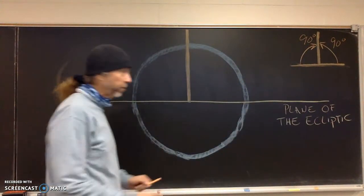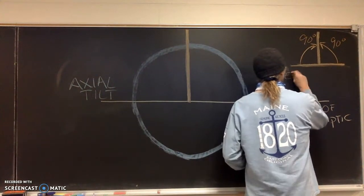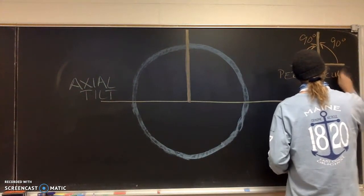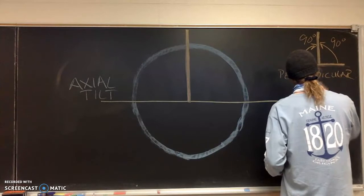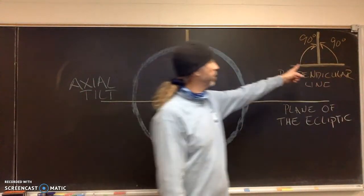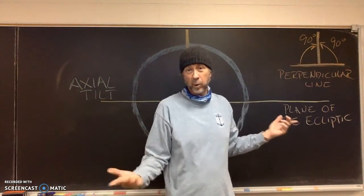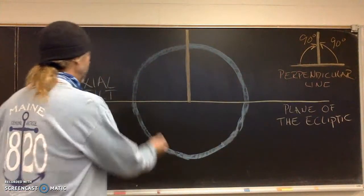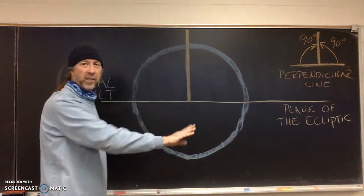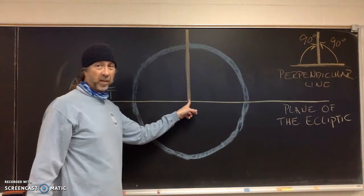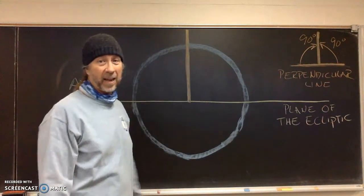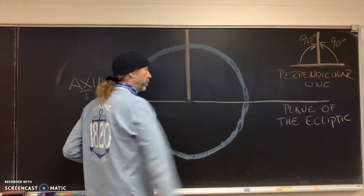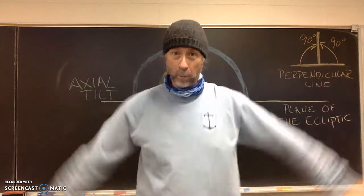Perpendicular line. So this line right here is a perpendicular line, and what it does is it creates two 90-degree angles — 90 degrees, 90 degrees, right angles. Now, the yellow line is the plane of the ecliptic, the blue represents the earth, and this perpendicular line is drawn from the very center of the earth, right where the plane of the ecliptic is going through, bisecting our planet.